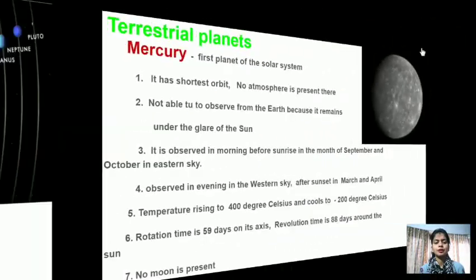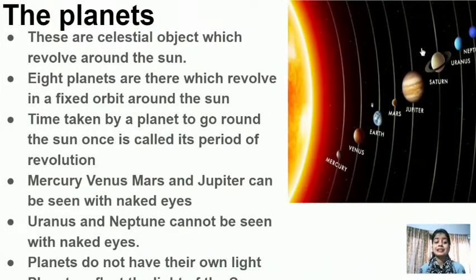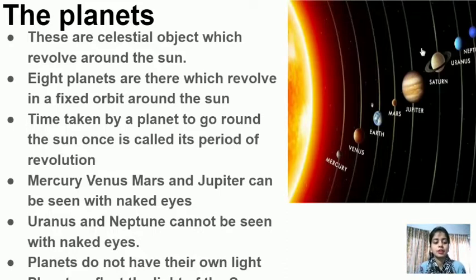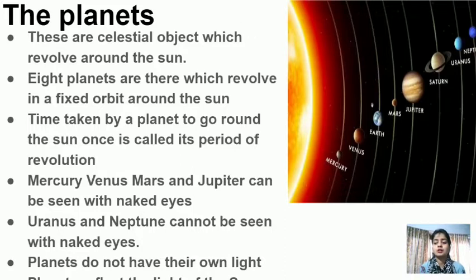Planets are celestial bodies which revolve around the Sun. There are eight planets — remembered by the mnemonic 'My Very Efficient Mother Just Served Us Nuts.' The time taken by a planet to revolve around the Sun is called revolution, and to spin on its own axis is called rotation. Mercury, Venus and Jupiter can be seen with the naked eye, whereas Uranus and Neptune cannot. Pluto is a dwarf planet and is no longer classified in the solar system.